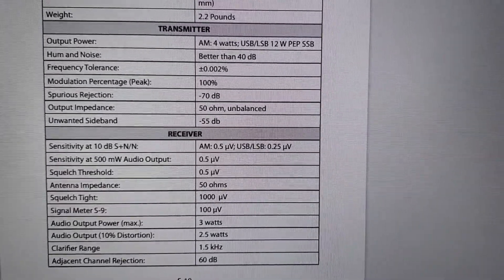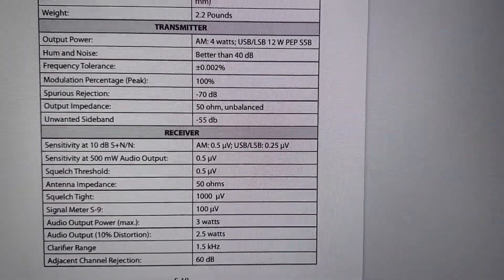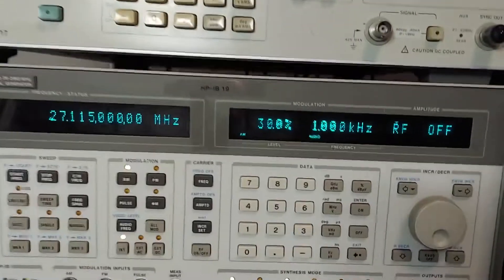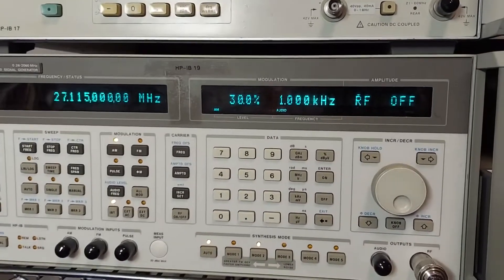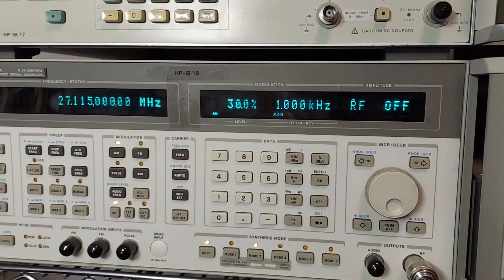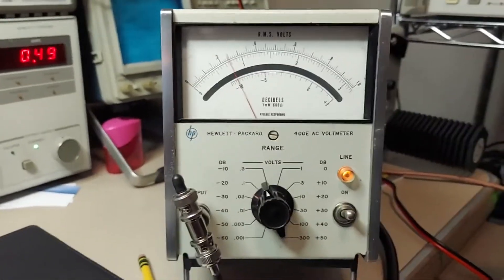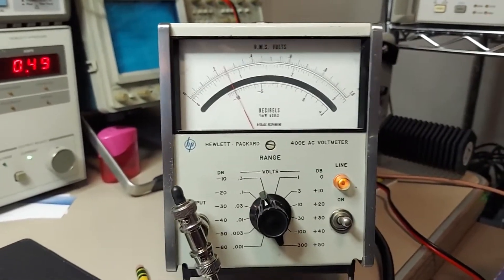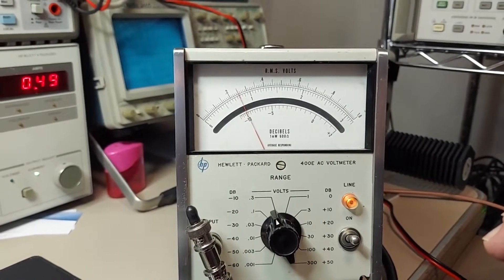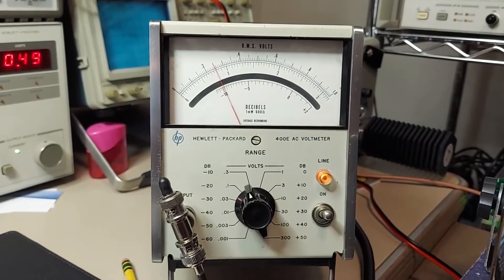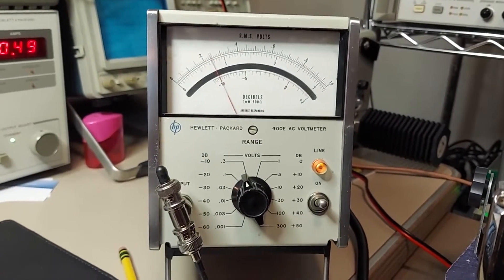I have the signal generator set up for 27.115 megahertz, 30 percent modulation depth at one kilohertz, and I have the output turned off. Since we're going to be gaining 10 dB, I set the output to minus 10 dB on my meter here. Now if I turn that signal generator on, that meter should deflect up to around 0 dB.